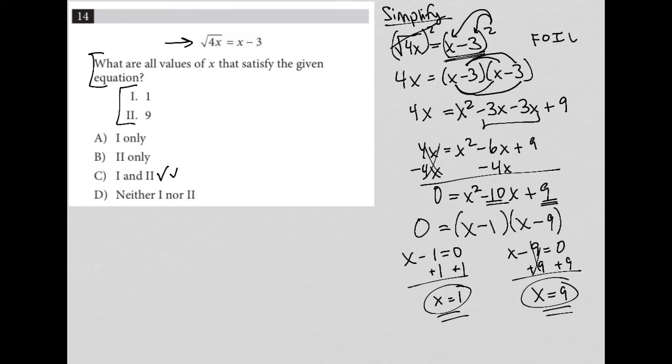Because I've been burned on questions like this in the past, what I really should do is go back to my original question and plug in these answers just to make sure nothing weird happens. When I plug in x equals 1, I'm left with square root of 4 equals 1 minus 3, and square root of 4 equals negative 2. For this test, this is actually not true. This is really strange, but hopefully I can explain and clarify.